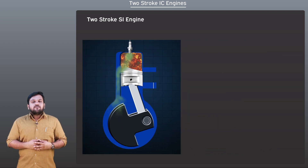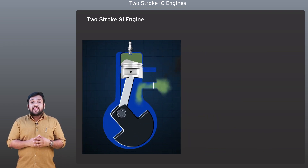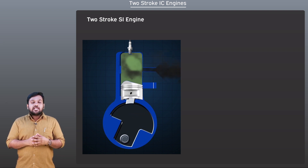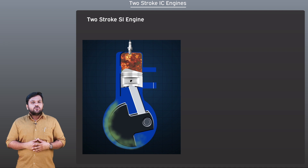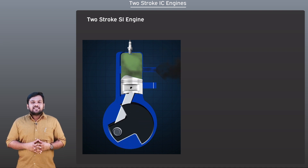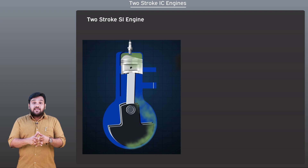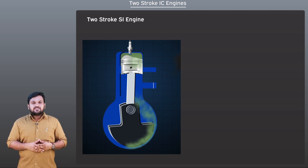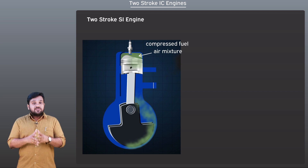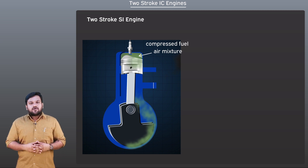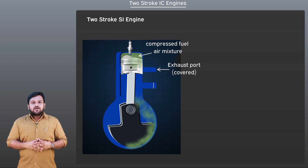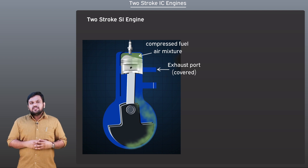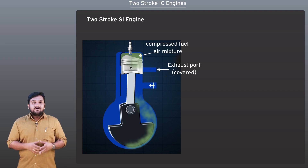The piston covers and uncovers the transfer port and exhaust port during its movement at the required timing. Now let us assume that the piston is residing near the top dead center, and the space between the piston head and the cylinder head is filled with the compressed fuel-air mixture drawn in the previous stroke. At this time, the exhaust port would be covered by the piston. During this period, the fresh air-fuel mixture from the intake reed valve manifold rushes into the cylinder casing and fills the crankcase.